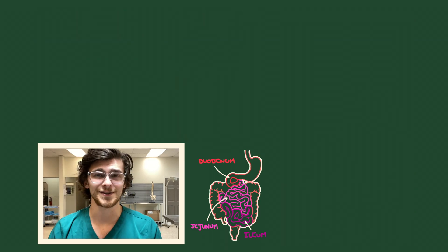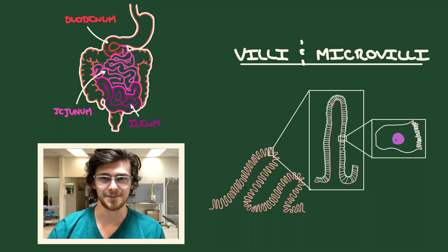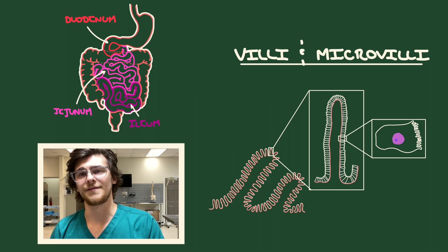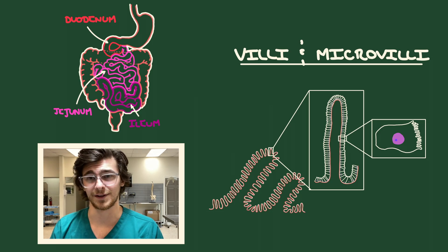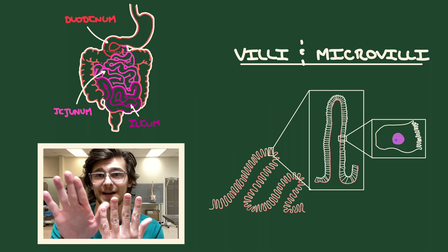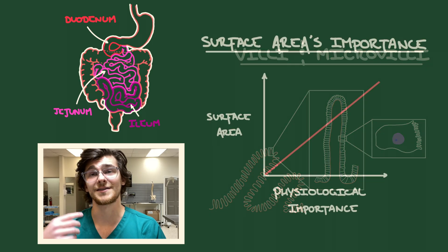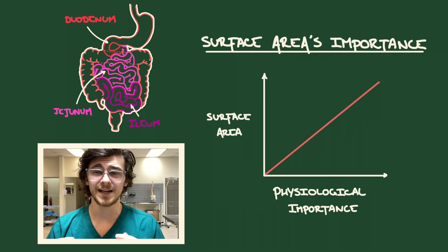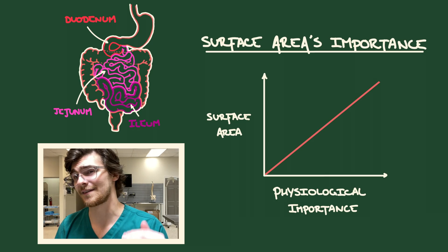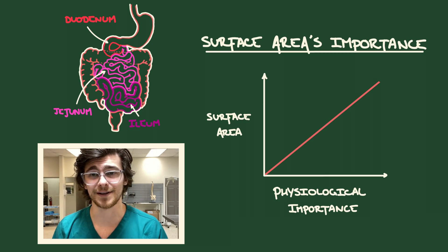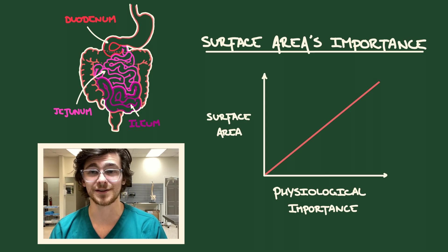The cells of the intestinal wall have finger-like projections called villi on their apical surfaces, and the villi also have finger-like projections called microvilli — just imagine fingers coming out of fingertips. All of these attributes share a common theme: increasing surface area. In biology, increasing surface area usually means something physiologically important is happening there, and in this case that's nutrient absorption.